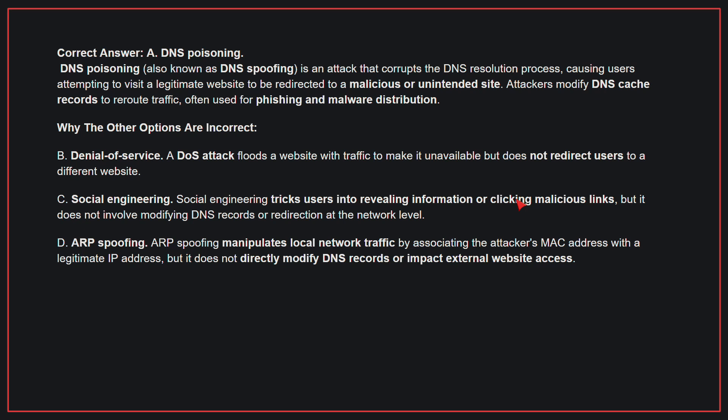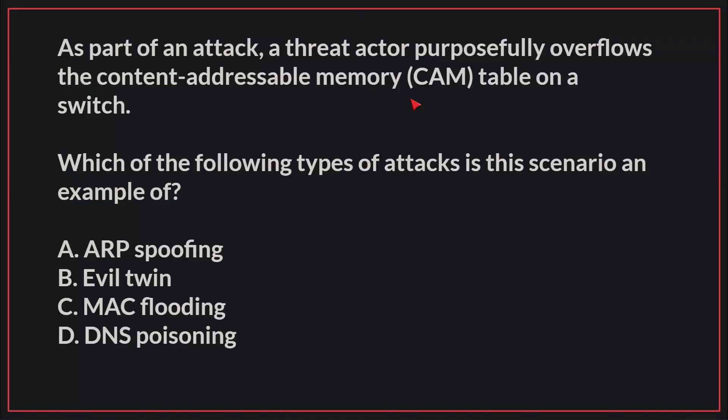Why the other options are incorrect: B, a Denial of Service attack floods a website with traffic to make it unavailable, but does not redirect users to a different website. C, Social Engineering tricks users into revealing information or clicking malicious links, but does not involve modifying DNS records or redirection at the network level. D, ARP Spoofing manipulates local network traffic by associating the attacker's MAC address with a legitimate IP address, but does not directly modify DNS records or impact external website access. Therefore, the correct answer is A, DNS poisoning.